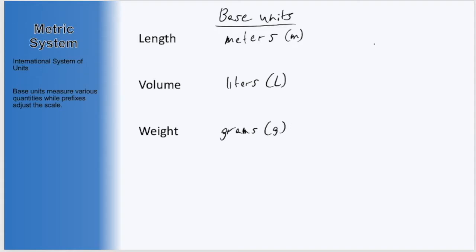Rather than making separate units to measure the same quantities at different scales, the metric system places prefixes before the base unit to adjust their scale. For example,